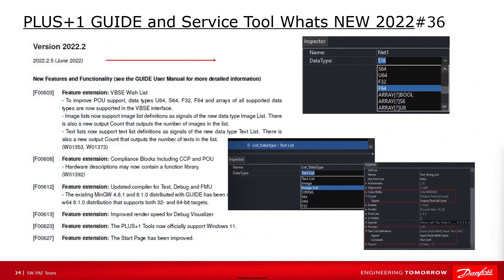The 2022.2 guide release contains some feature extensions like the vector-based screen editor extension with additional floating-point data types. Since guide doesn't support floating-point, these data types can be used in pure POUs called inside the screen editor. Also inside the vector-based screen editor, image and text list now supports definitions as signals of the new data types image list and text list. These new data types allow passing of a list into a list component. In addition, there is a new output count that outputs the number of images or text in the list — one use case could be a widget which displays a generic list where a POU can do calculations based on the number of elements.